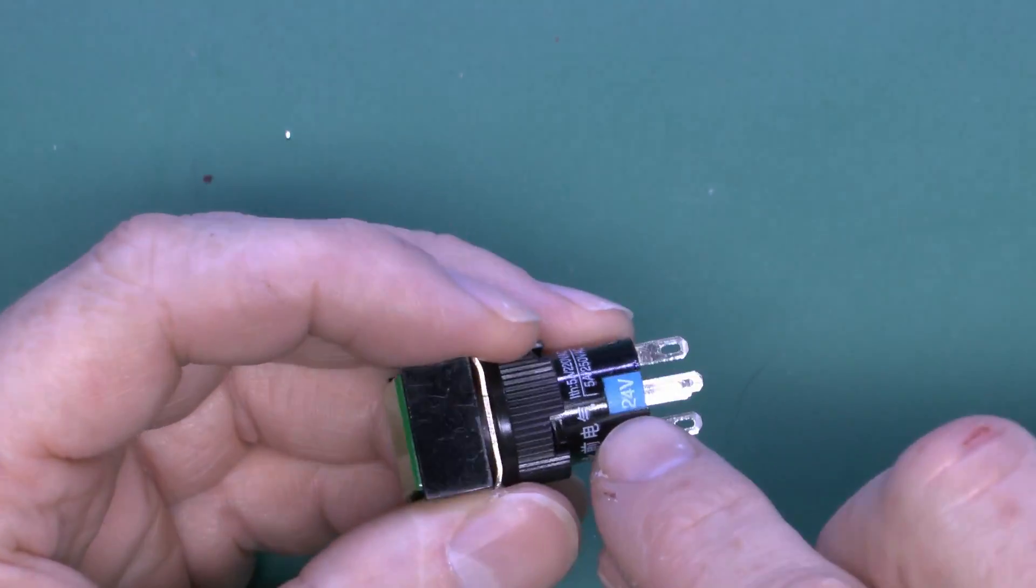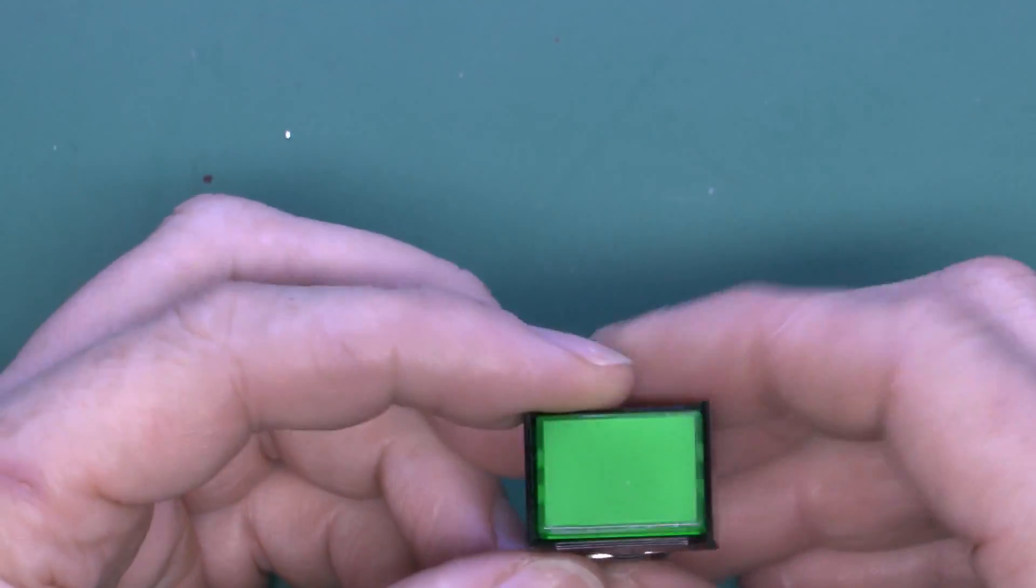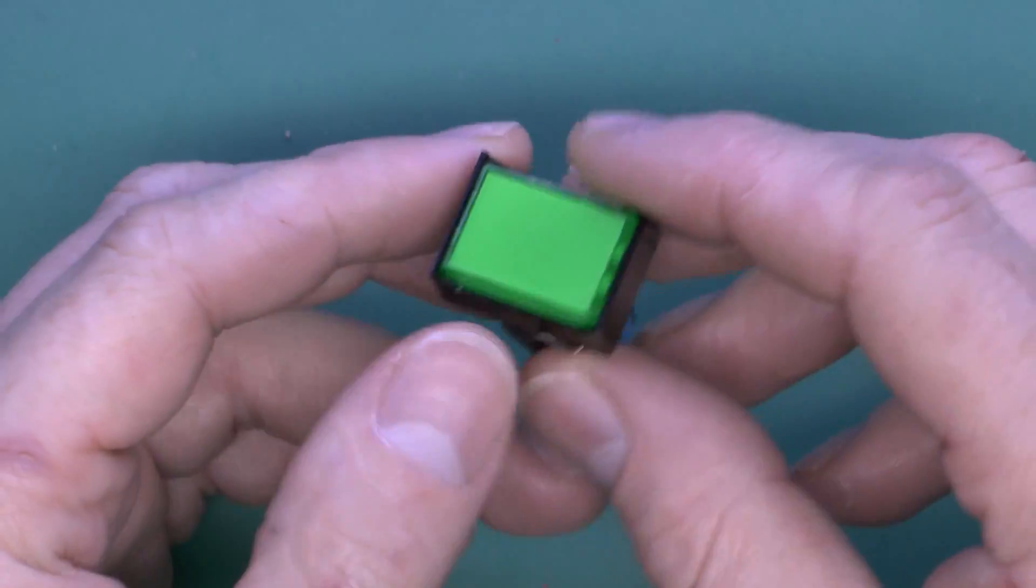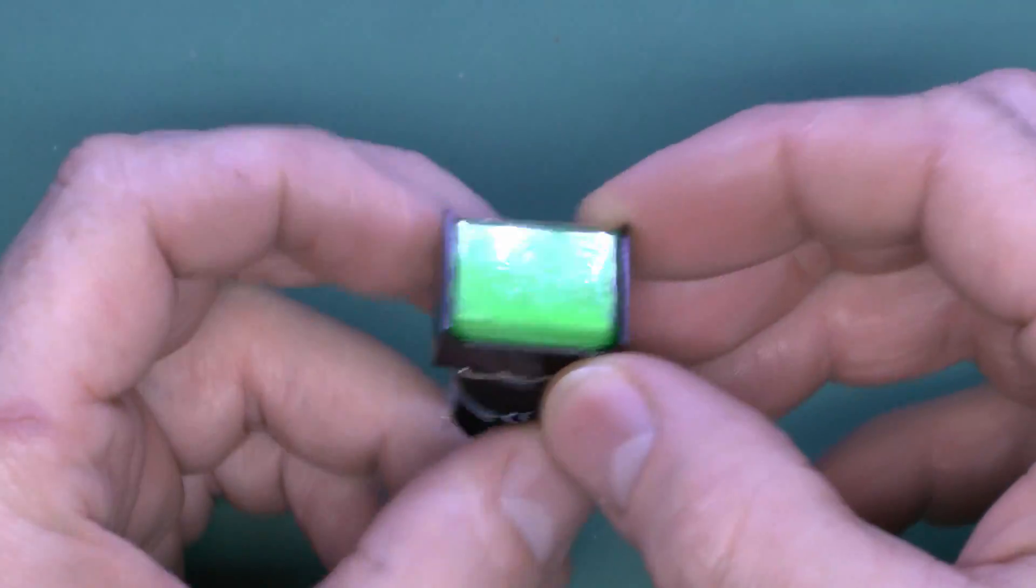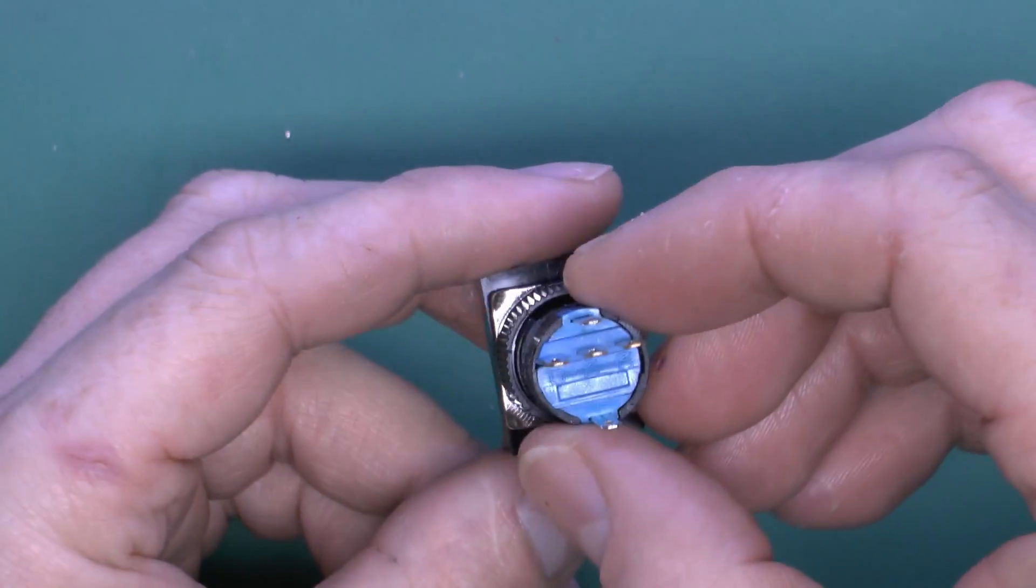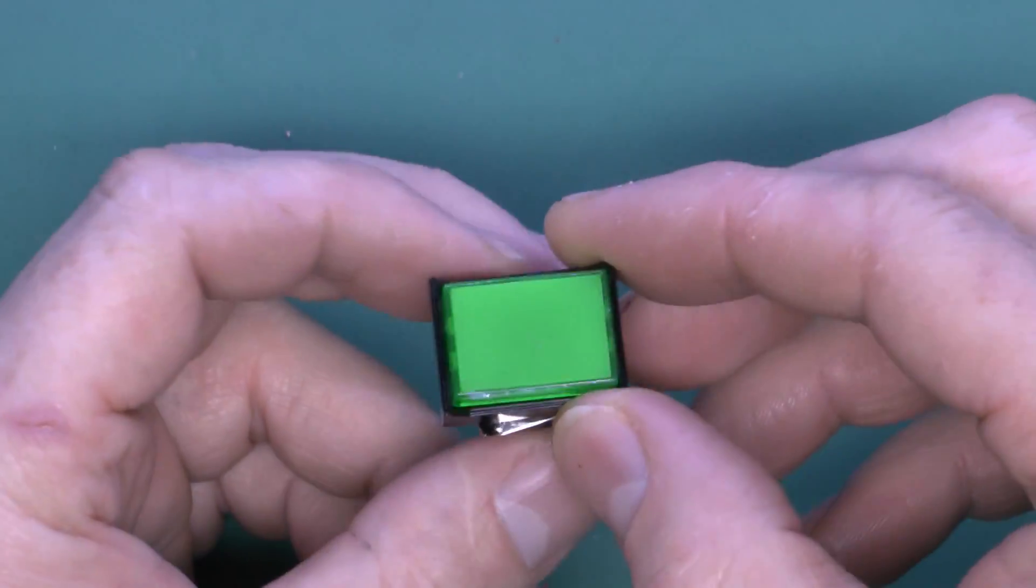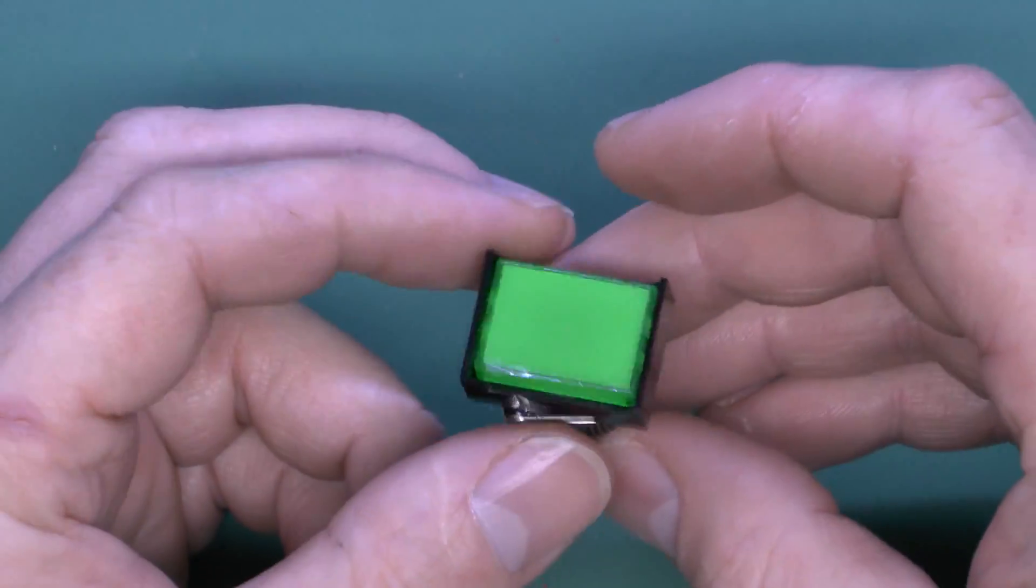Now these ones are 24V, and I bought these for use with the CNC machine, but it turns out that the actual illumination of these is a tungsten lamp. Now that's not in itself a problem, but for the particular application we're going to use the CNC machine, then it turns out that it actually is.